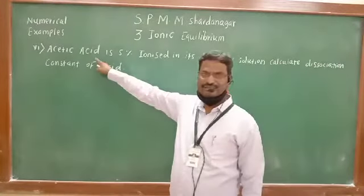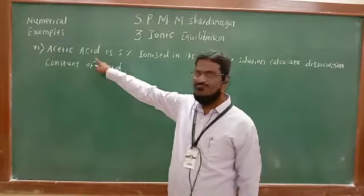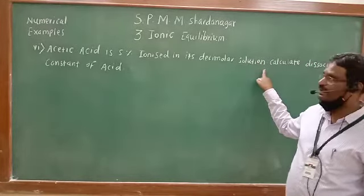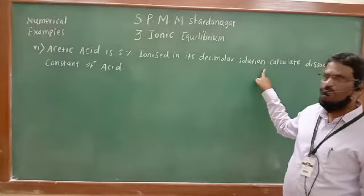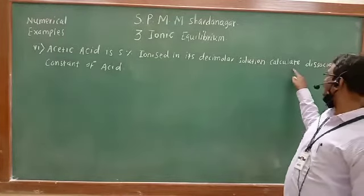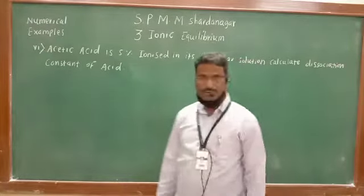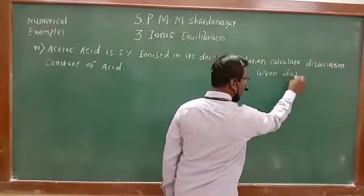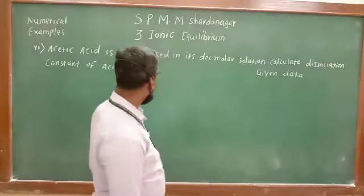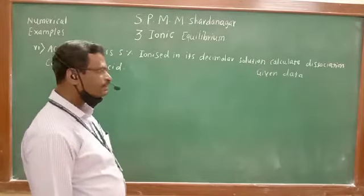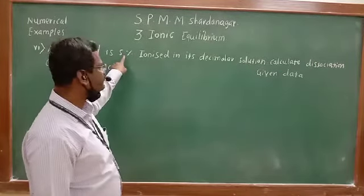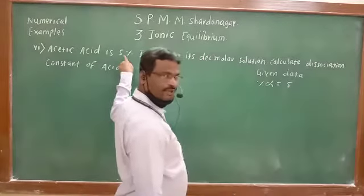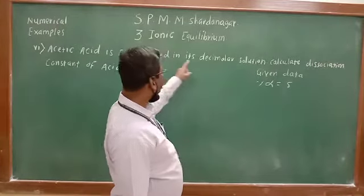Now problem number 6, numerical example number 6 from question number 3. Acetic acid is 5% ionized in its decimolar solution. We have given the acetic acid solution that is 5% ionized in its decimolar solution. Calculate the dissociation constant of the acid.